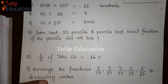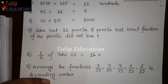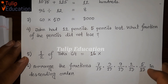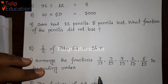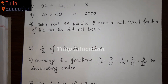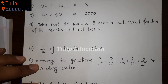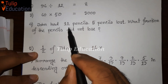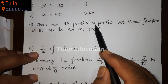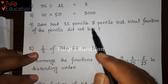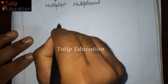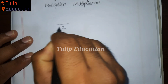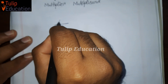Question number 4: John had 12 pencils and 5 pencils were lost. What fraction of the pencils did not get lost? Out of 12 pencils, 5 are lost, so 5 out of 12 is the fraction lost. Therefore, 7 out of 12 pencils did not get lost.